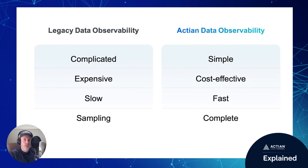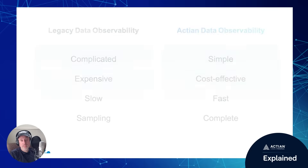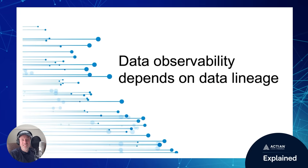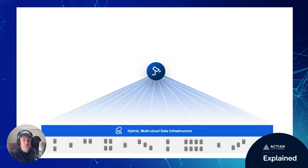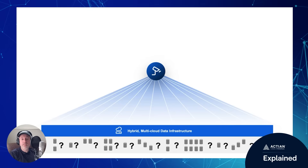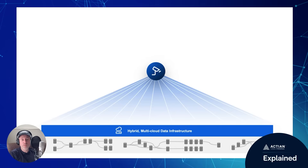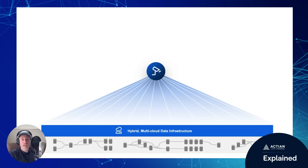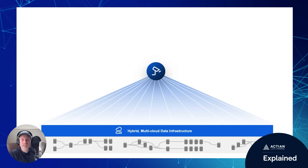You need to know that data observability depends on data lineage. Observability sees data quality but cannot track movement between observation points. True data observability requires data lineage to track movement across data infrastructure, because lineage tracks that movement and enables the data to be observed.